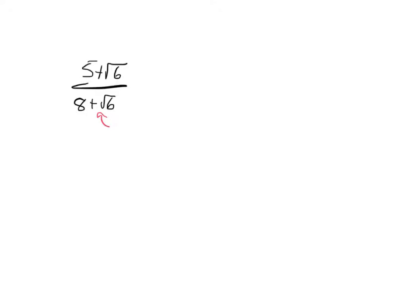To do that, we are going to multiply this by 8 minus the square root of 6. 8 minus the square root of 6 is the conjugate of this denominator over here. And we're going to multiply by that because of the great way those two multiply together.